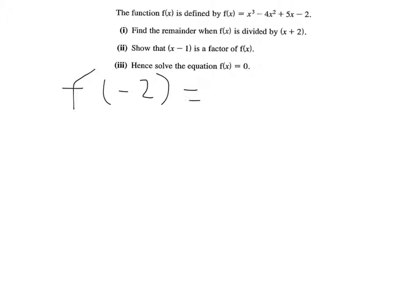And when you do that, obviously you'll get minus two cubed minus four lots of minus two squared plus five lots of minus two take away two.